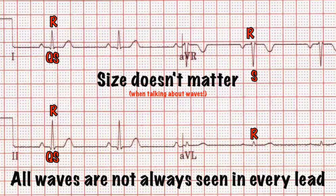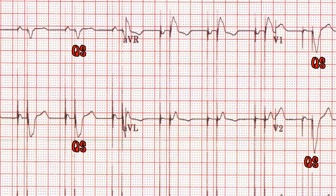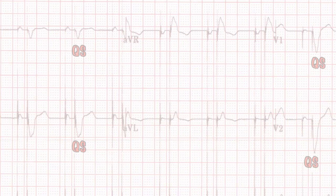If there is no R wave, the downward deflection is termed the QS wave as there is no telling if it is a Q wave or an S wave.